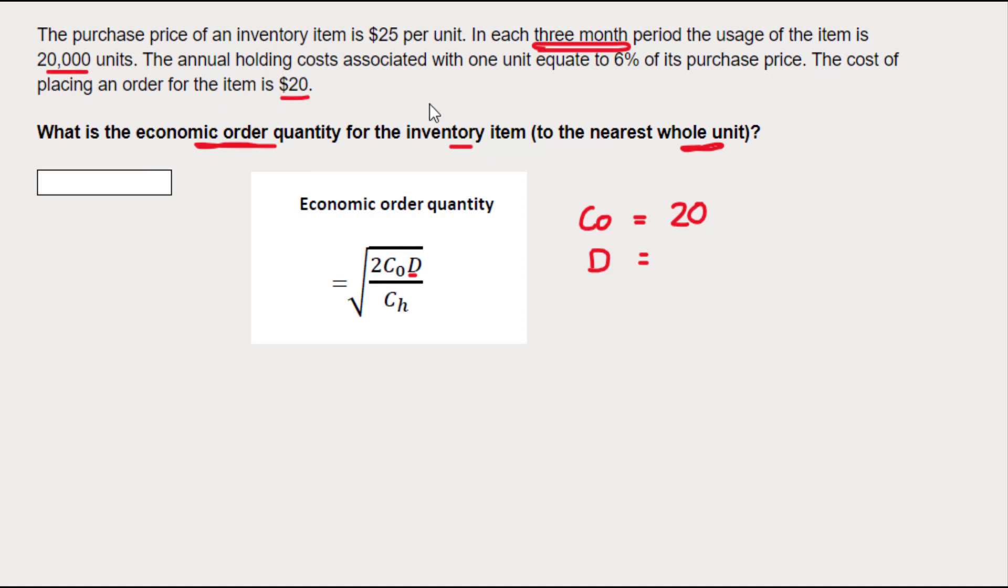So to get this up to a full year, I'm going to have to get from three months up to a full year of 12 months. So 12 months in a full year divided by three months in this period - that means there are four three-month periods. So my annual demand is four times this three month amount of 20,000, so my annual demand comes out at 80,000. I'm using k here to represent thousand.